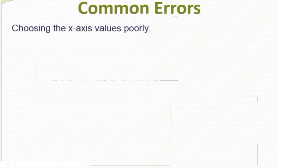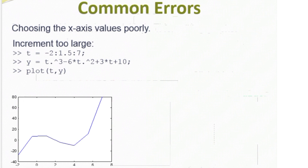There are a couple of common errors that people typically make when learning how to plot, and these revolve around choosing x-axis values poorly. We're going to plot the same polynomial as before, but I'm going to choose the x-axis values differently. My vector t will start at minus 2 and not exceed 7, but my spacing is going to increase dramatically — points spaced 1.5 apart instead of 0.01. You can see the effect: the x-coordinates are spaced so far apart that I get a very choppy looking plot instead of the nice curve expected with a polynomial.